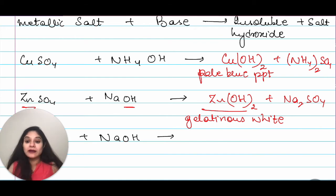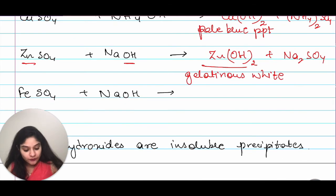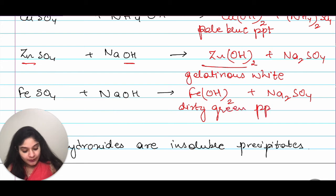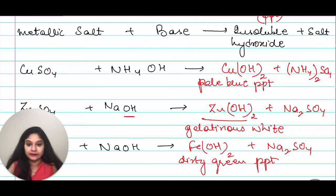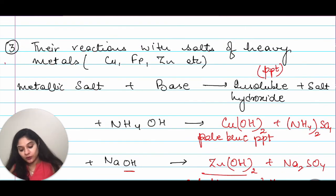Moving on. I have FeSO4 plus NaOH. That would give me Fe(OH)2 plus Na2SO4. And this is a dirty green precipitate. Dirty green precipitate. These hydroxides are insoluble precipitates. So, this is an important one. You should know these.